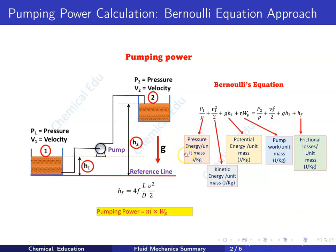The frictional loss hf can be calculated using the formula: hf = 4f·L/d × v²/2, where f is the friction factor of the pipe, L is the length of the pipe, d is the diameter of the pipe, and v is the velocity of the fluid flow inside the pipe.